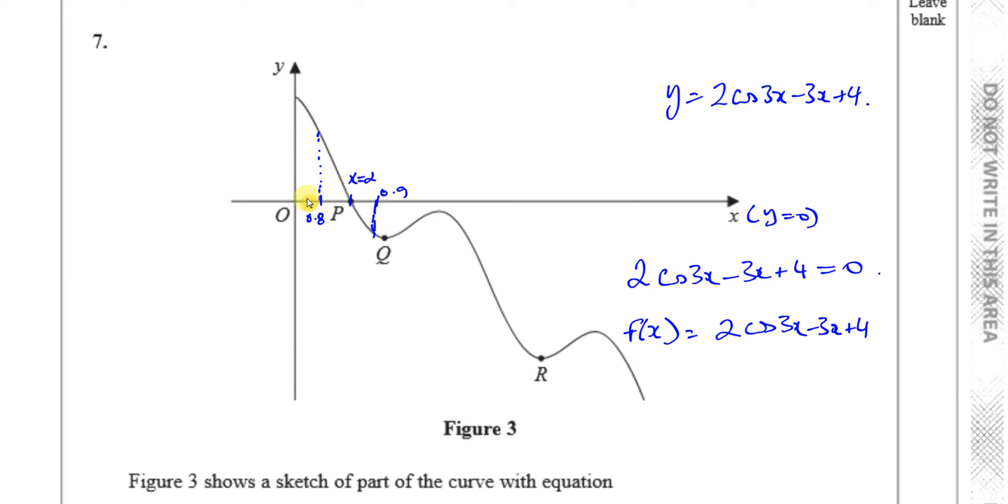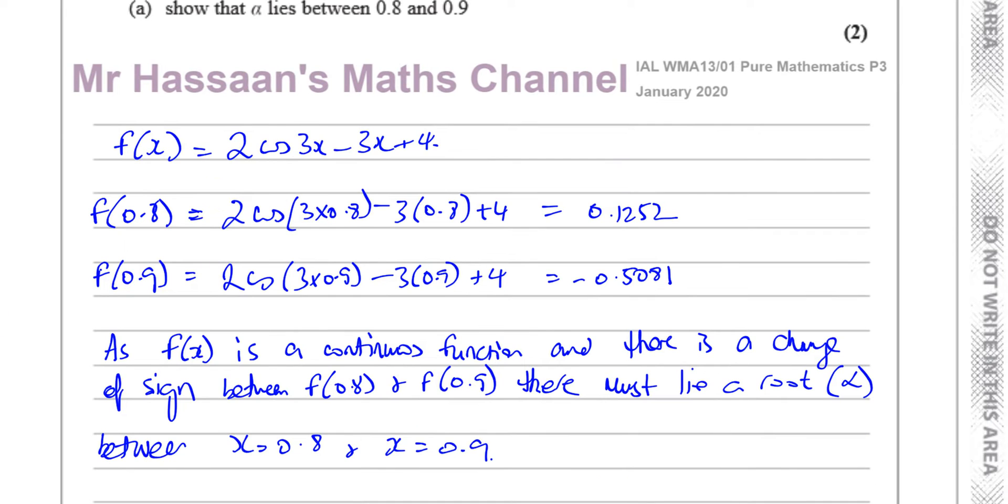It's basically continuous. It doesn't just, you know, stop here. So there must be a root between these two values. Okay, so that's part A completed. Now we're going to go to part B.